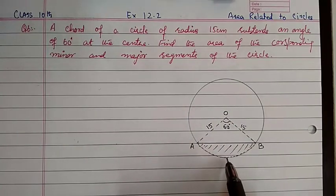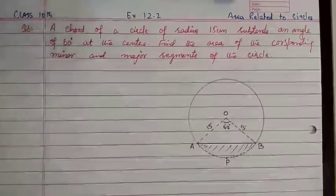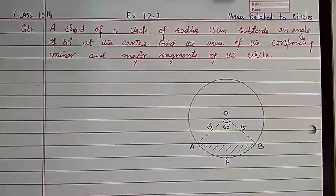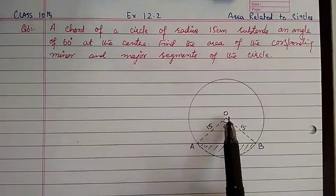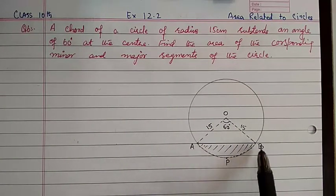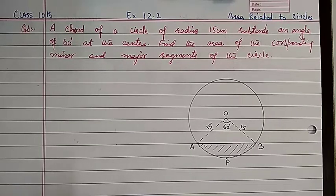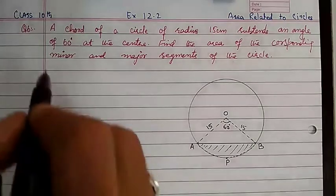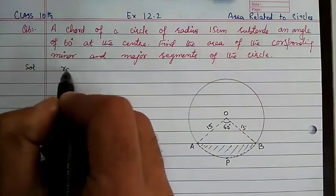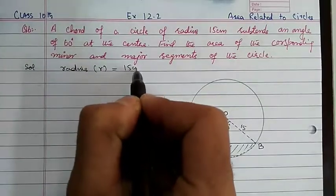For this, we first name the sector OAPB, locating an additional point P on the arc so we can differentiate between the triangle and sector. We will find the area of sector OAPB first, then in the second step find the area of triangle OAB, and subtract the triangle from the sector to get the area of the segment.